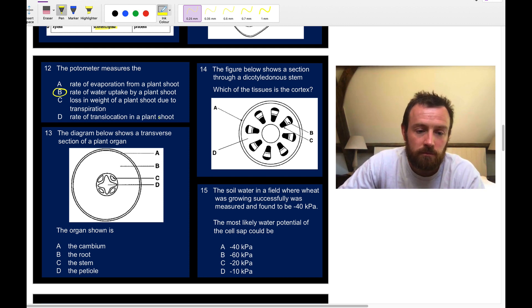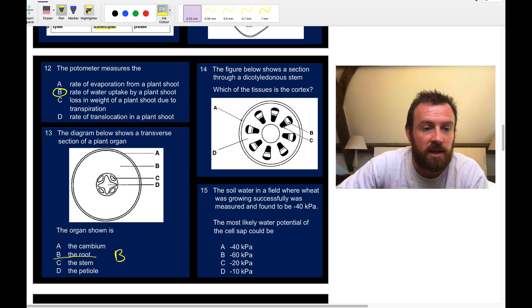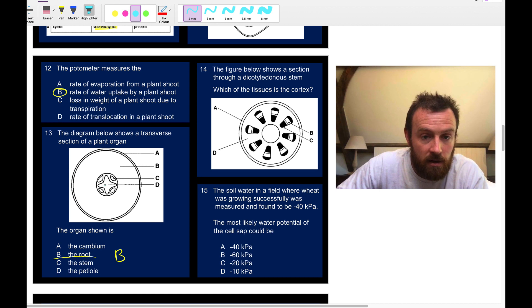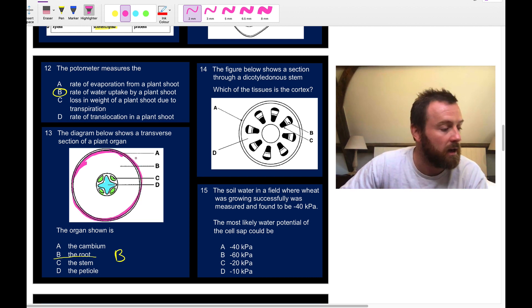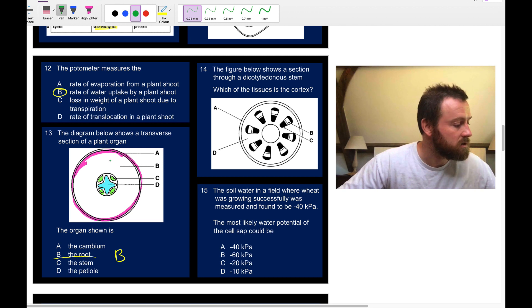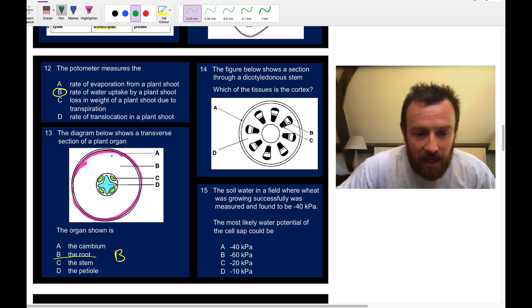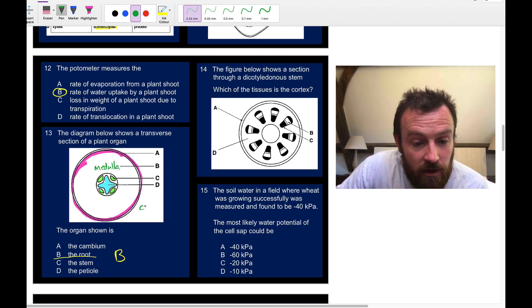Question 13: here we've got a plant organ. We can clearly hopefully recognize that this is the root, so that's B. Remember if we were to color this in, this is the xylem here, so the area D is the xylem. The area C here is the phloem, and A is the endodermis all the way around here. That's the outside of the vascular bundle. I've forgotten what B is called, you'll have to remind me. I haven't taught this for a year or so. It is the medulla, that's right. So this is the medulla, outside of that would be the cortex.